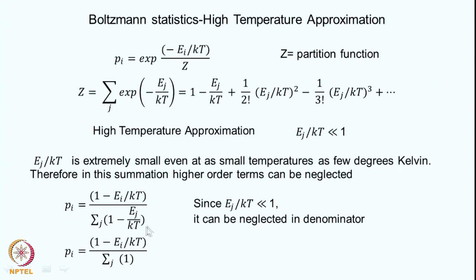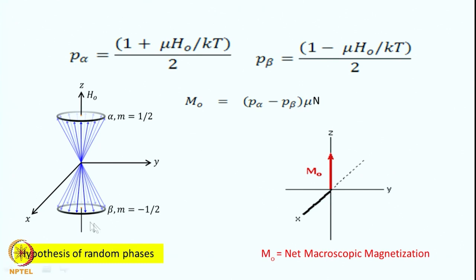In the denominator, E_j over kT is still very small compared to 1, so I can further neglect this term and get P_i equal to 1 minus E_i over kT divided by the number of states. For a spin-half there are only two states, alpha and beta. The probability for the alpha state is then given by (1 plus mu*H-naught over kT) divided by 2, and P_beta is (1 minus mu*H-naught over kT) divided by 2. For nitrogen-15 it will be the opposite because gamma is negative.